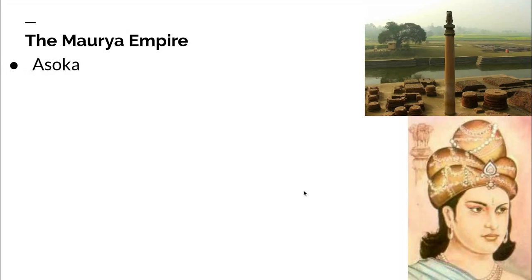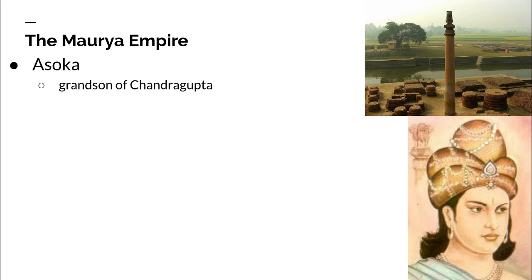Credited as the greatest king of the Maurya Empire is a man by the name of Ashoka, who is the grandson of Chandragupta. Remember — dynasty. Ashoka was a ruthless military leader, just like many kings and just like his grandfather.